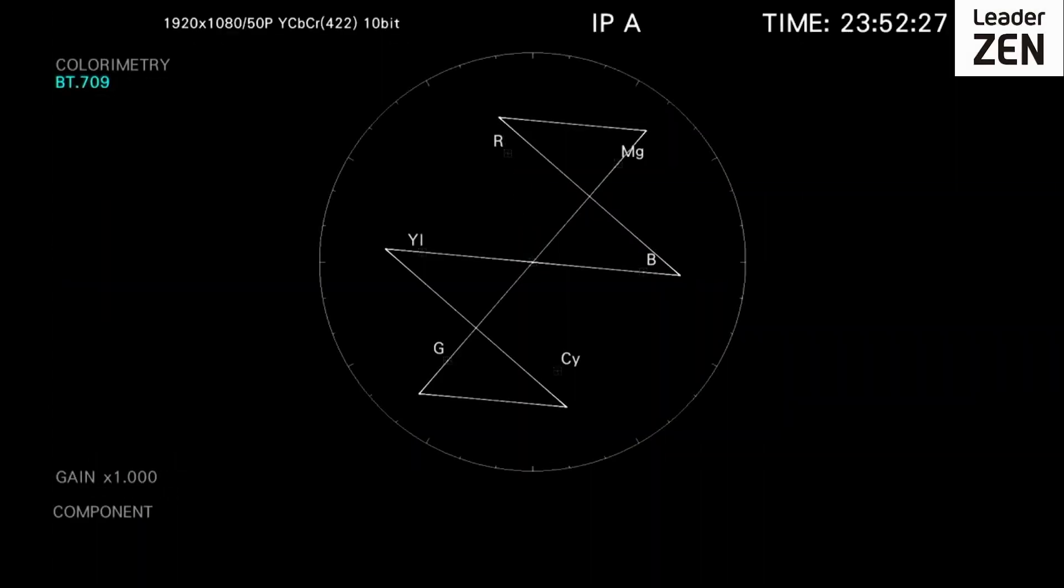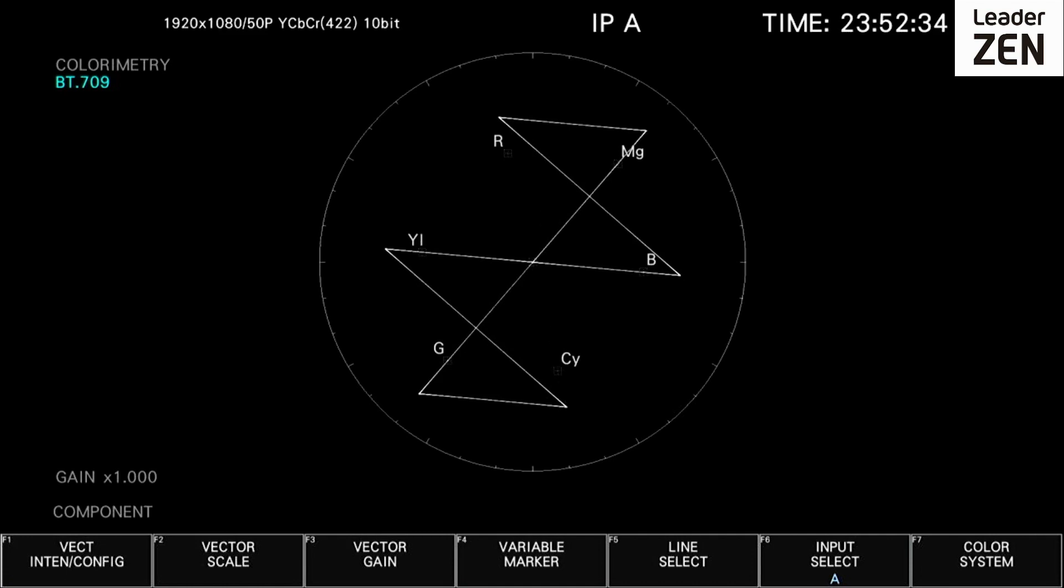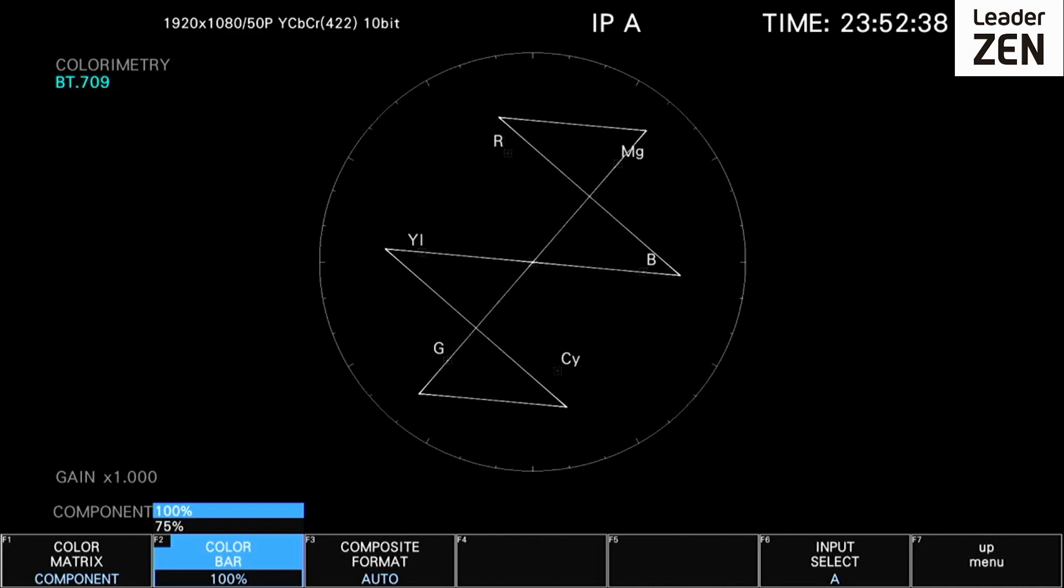The Leader Zen series vectorscope graticule includes target markers for the primary colors and can be configured to display either 75% color bars or 100% color bars.